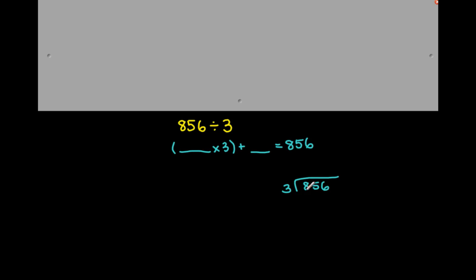We would say 3 goes into 8 how many times? It goes in 2 times. So 3 times 2 gives us 6, and what do I have a remainder of? Well, 6 and what make 8? 2. So I have a remainder of 2. Then what we do is pull down the 5. We keep 3 as the original divisor — we're always going to say 3 times what goes into this number. So now we say 3 times what goes into 25? Our remainder has to be smaller than our divisor.